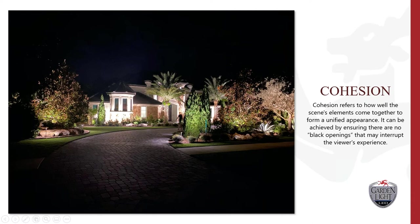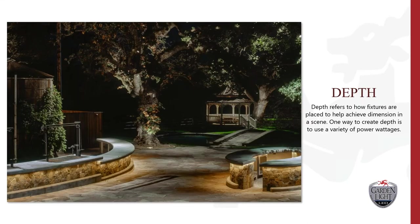The first principle is cohesion. Whether it's the front, back, or side of the yard, you always want to have continual light going through the landscape. You can achieve this with a combination of different lighting techniques — pathway lighting, uplighting, downlighting from the eaves. No matter what techniques you use, you want cohesion, continuous light going through that lighting scene with no black holes.